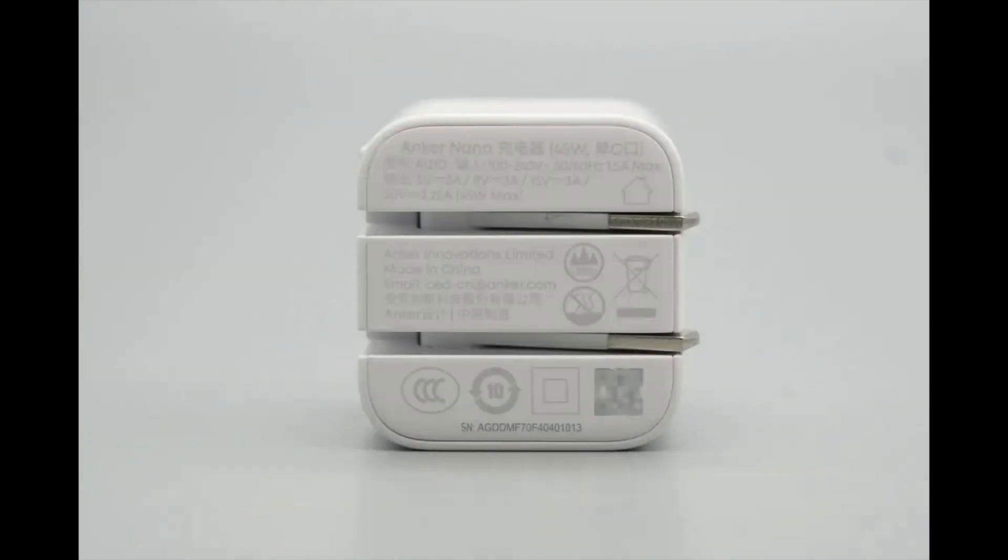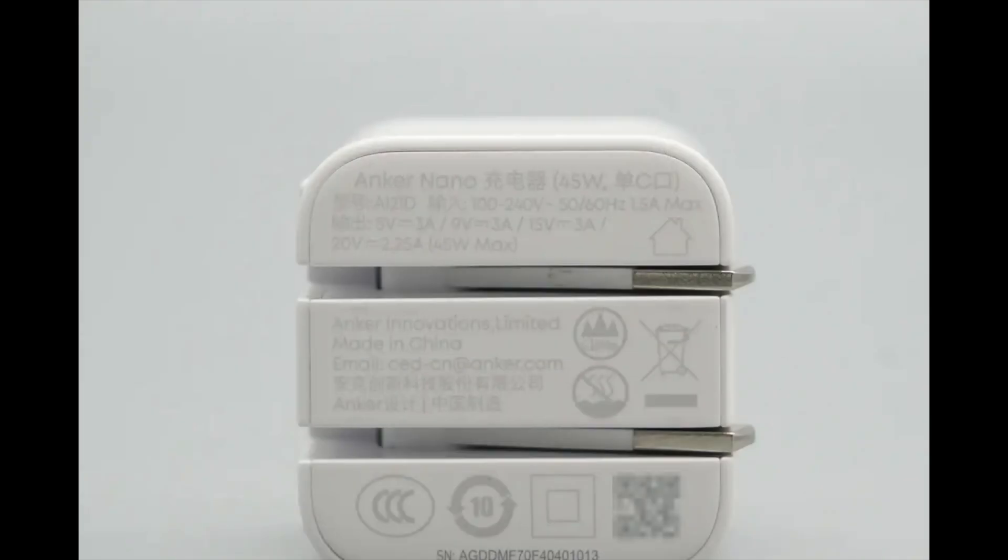The input side of the casing is printed with the specifications. Model A121D. Input: 100 to 240 volts, 50 or 60 hertz, 1.5 amps max. Output: 5 volts 3 amps, 9 volts 3 amps, 15 volts 3 amps, 20 volts 2.25 amps, 45 watts max.